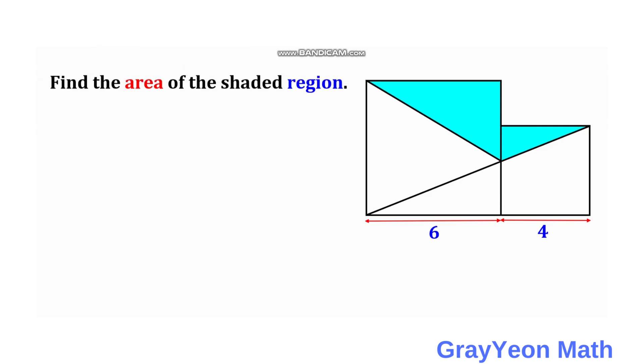Welcome to GrayonMath. We are asked to solve this problem. We have two squares that are put side by side, and a diagonal is drawn from this point of the smaller square to the point of the larger square, and another diagonal is drawn from the intersection of the first diagonal to the point of the larger square. The side lengths of the squares are 6 and 4. We are required to find the area of the shaded region.